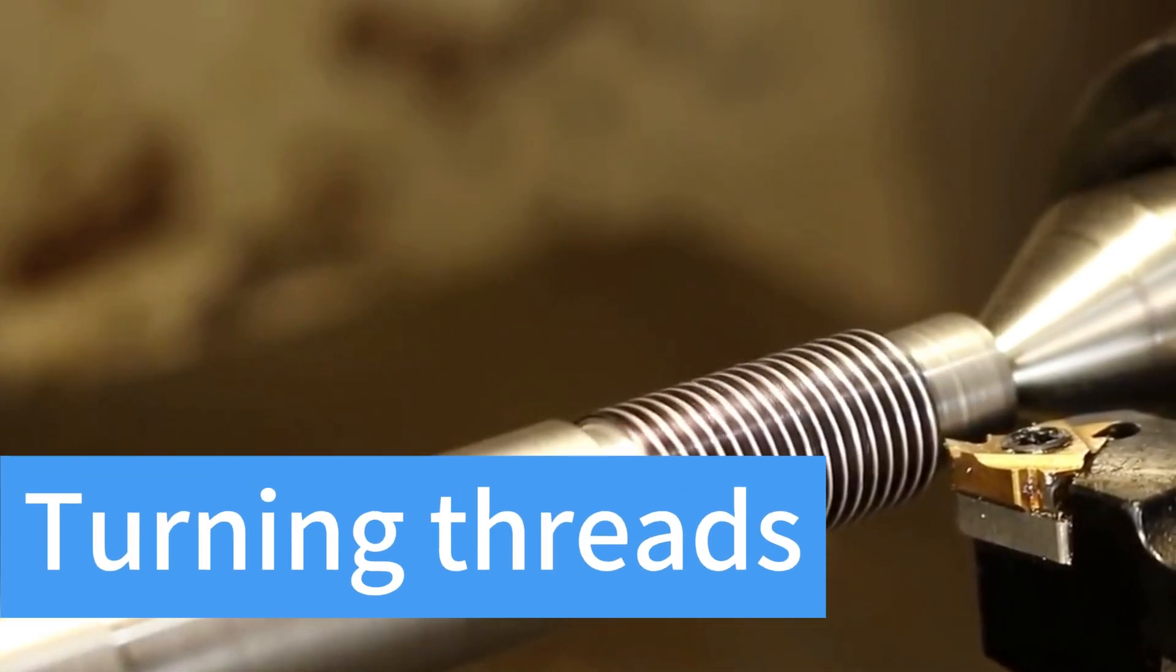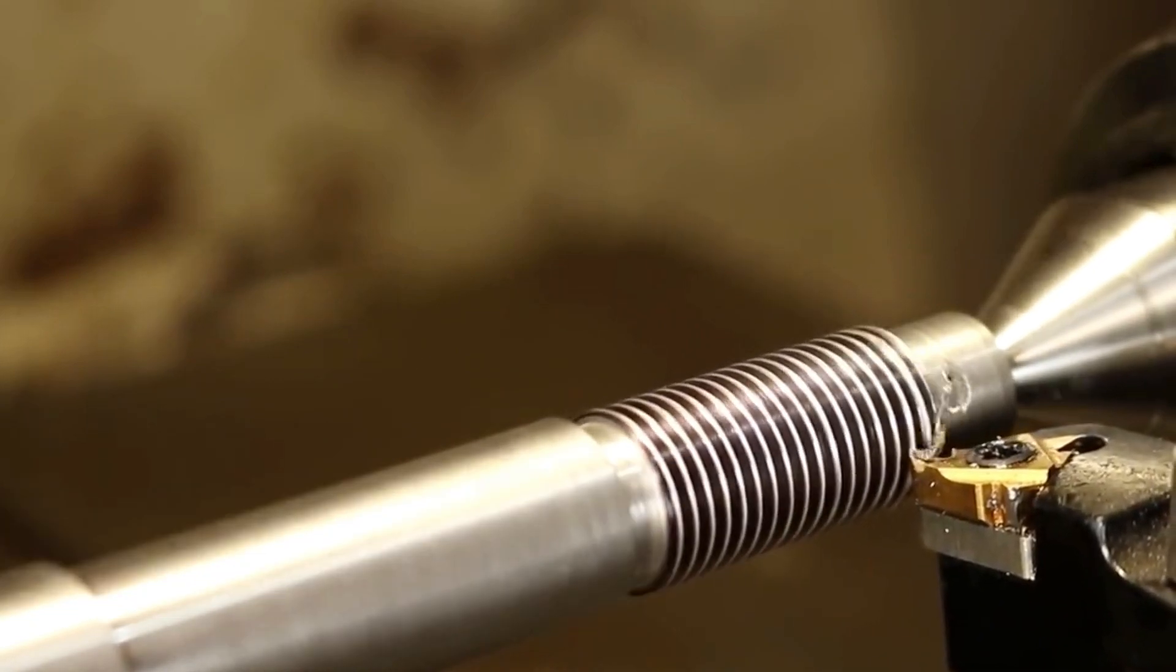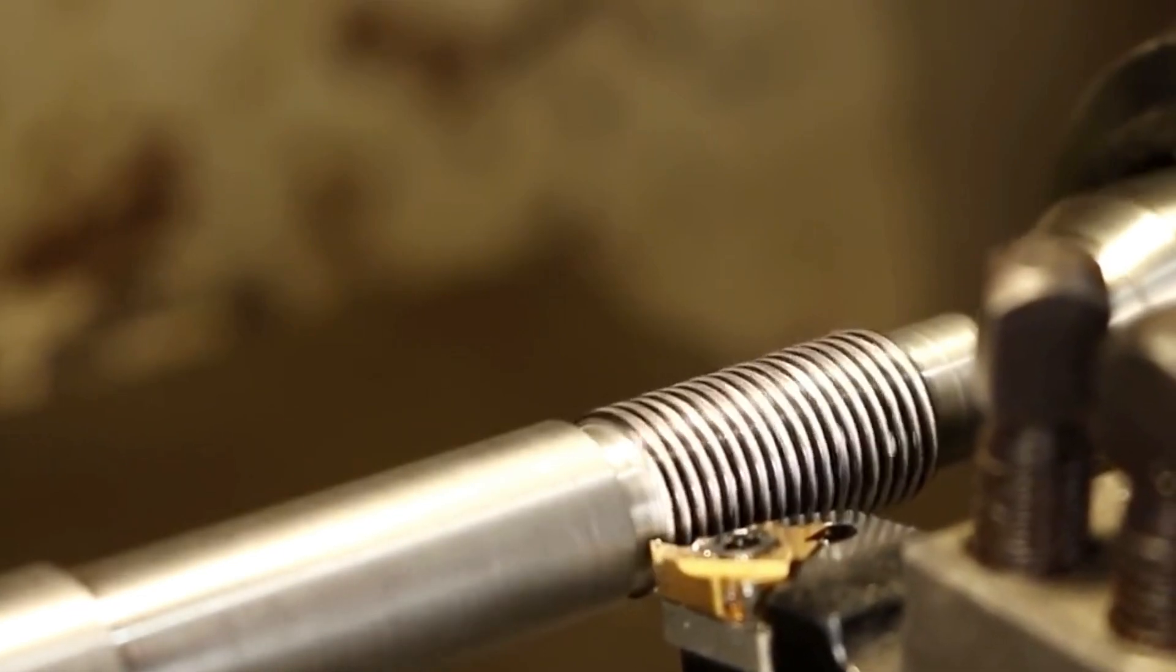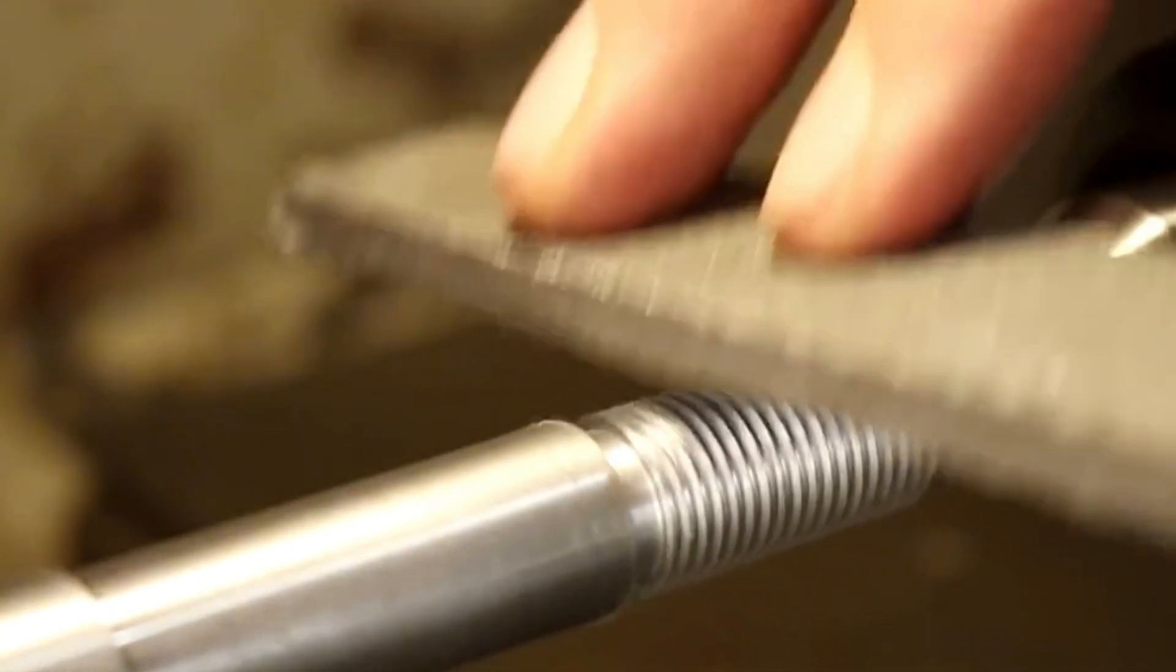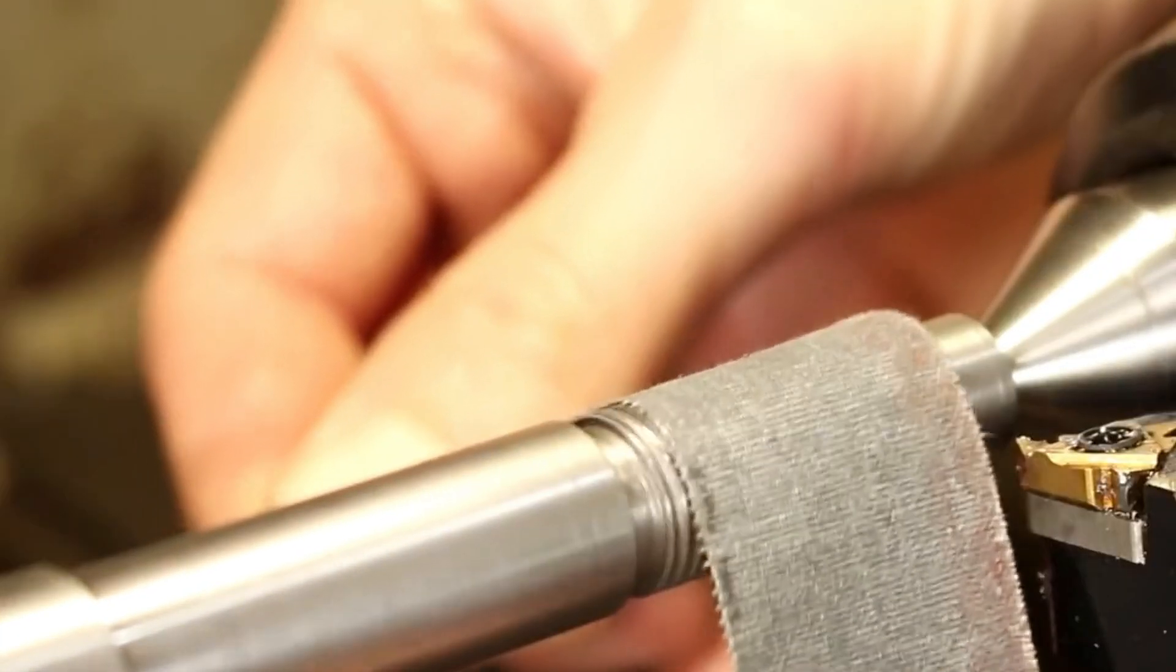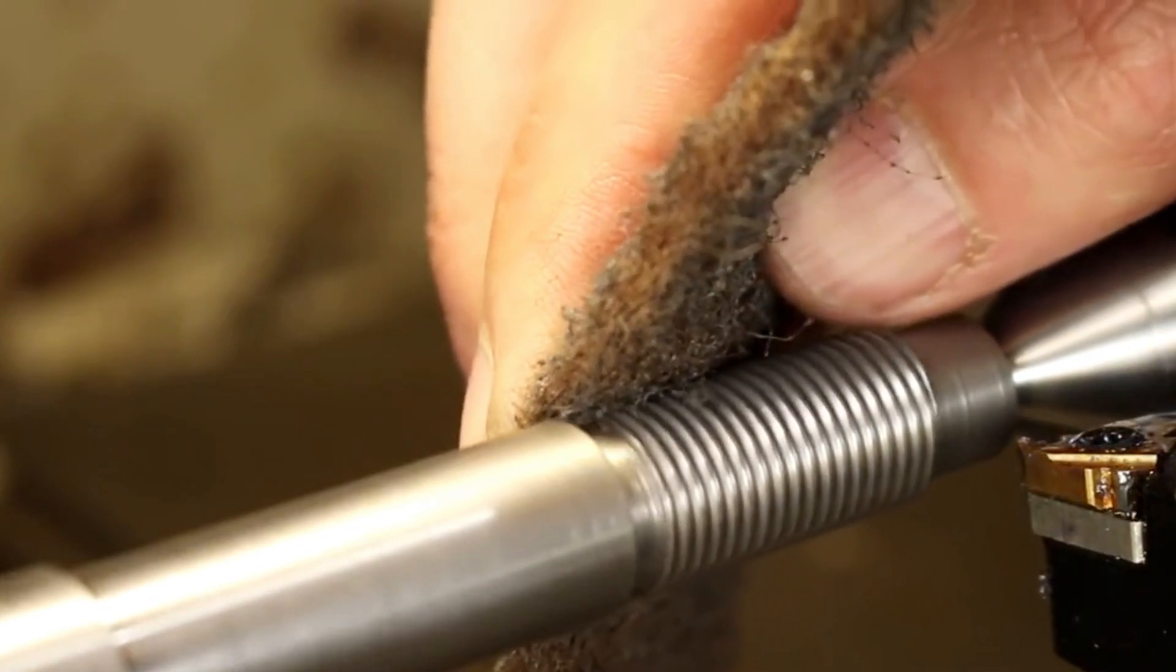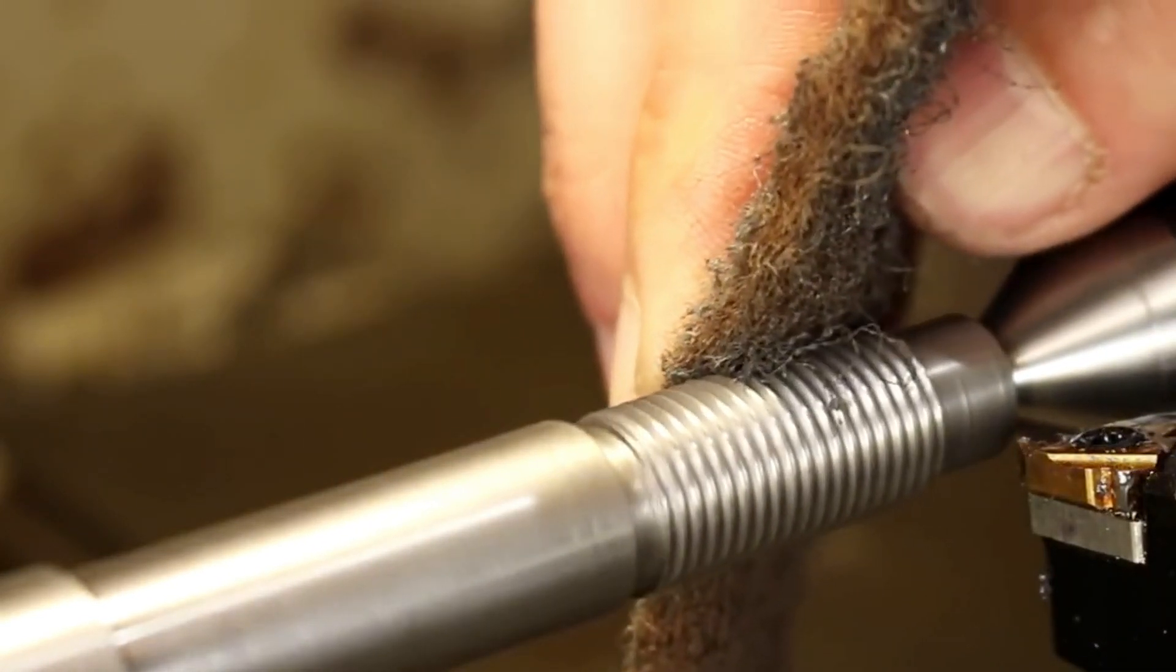Turning threads. There are many methods of thread machining. Among them, the thread processing with a turning pin is a common processing method. The workpiece rotates, the tool moves along the workpiece axis, a path that leads to the cutting edge, the threaded surface of the workpiece is formed.